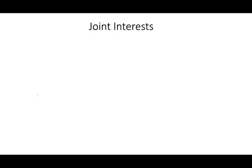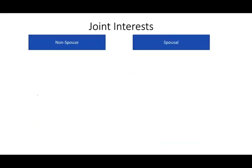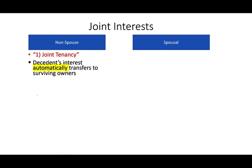Joint interest means when you own a piece of property with someone else. You could own it with your spouse or with friends, a brother, or anyone. Under non-spousal joint ownership, you have two categories. Joint tenancy means the decedent's interest automatically transfers to the surviving owner — you have no control over that. So it's included in the decedent's gross estate using the inclusion formula. If the ownership is tenants in common, the decedent can pass the property to whoever they want, and it's includable in the gross estate using their ownership percentage.